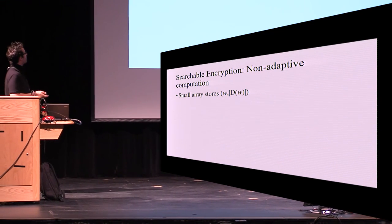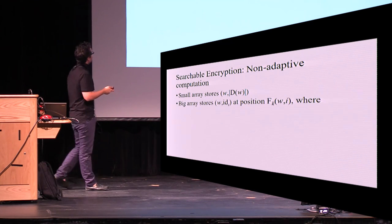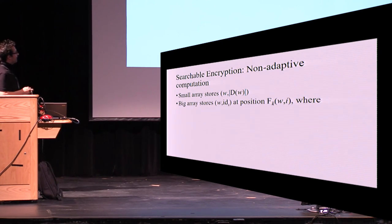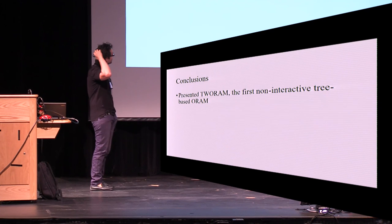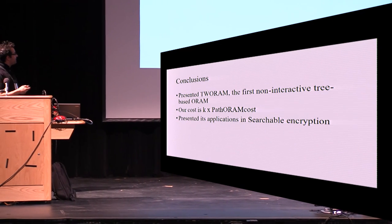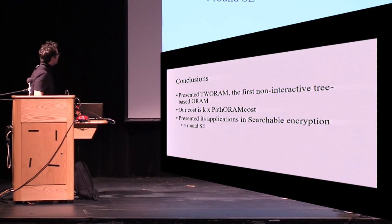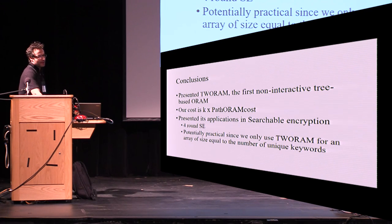Searchable encryption is a non-adaptive computation: the small array stores W and the number of documents matching each keyword, and the big array stores all the (W, ID) pairs. To conclude, I presented 2RAM — the first non-interactive tree-based ORAM — with cost K times path ORAM. I also presented its application to searchable encryption: a four-round searchable encryption scheme that is potentially practical, since we only use 2RAM for an array of size equal to the number of unique keywords, and use path ORAM without a position map for the rest. Thank you.